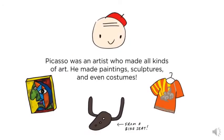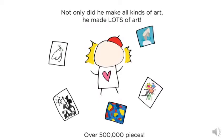Picasso was an artist who made all kinds of art. He made paintings, sculptures, and even costumes. Not only did he make all kinds of art, he made lots of art — over 500,000 pieces.